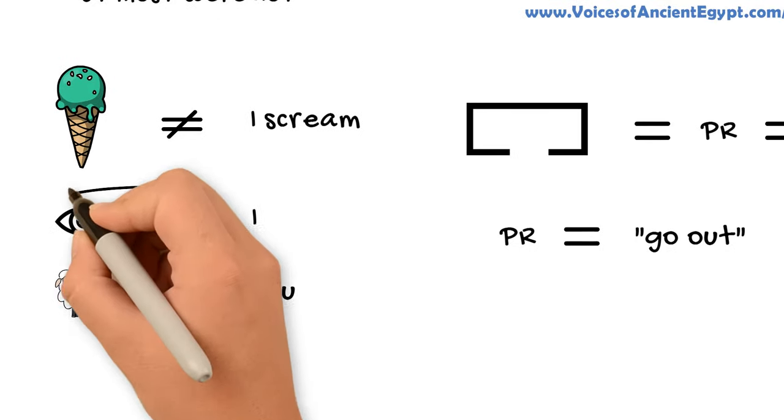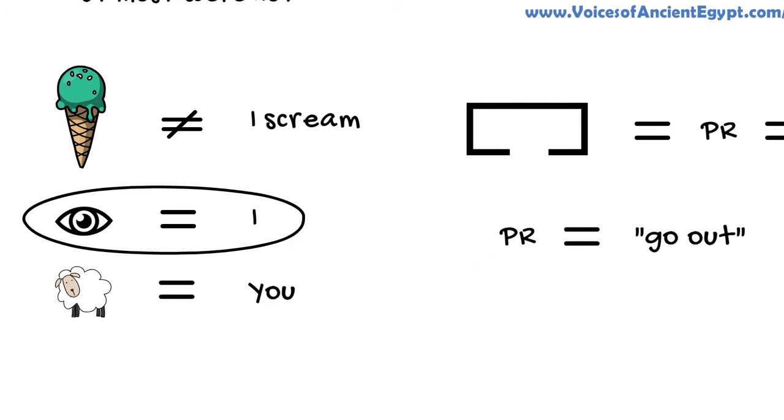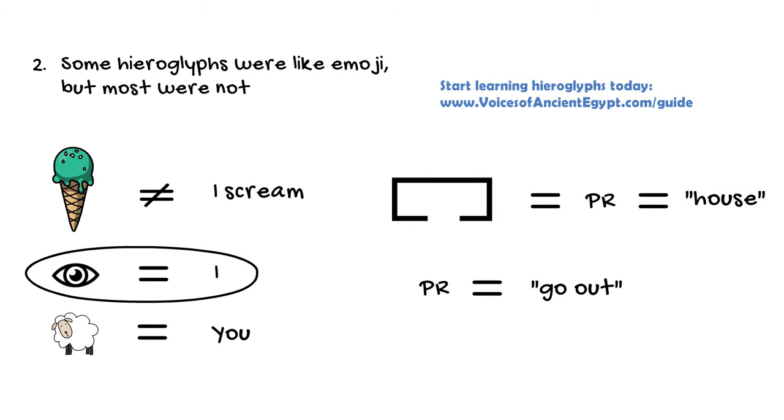And this is, of course, exactly the same kind of use of how we were using that eye before, that eyeball, to represent not a body part, but in fact the word I, as in the pronoun referring to myself.